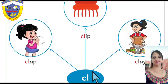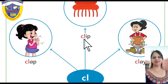Let's start. We will focus on blend words with CL. First is 'clap' — CL-AP — clap. Clap means to hit your hands together many times. Next is 'clip' — CL-IP — clip. Clip means to hold the woman's hair in place.